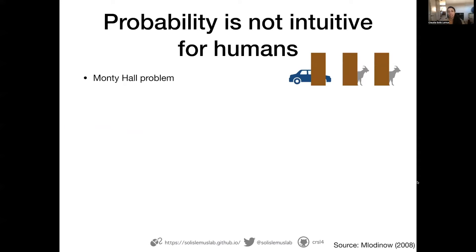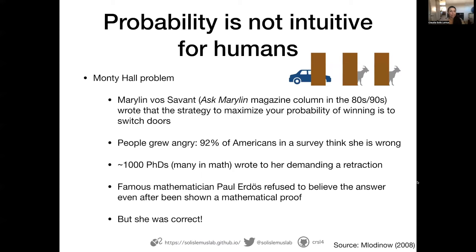There is one very famous example where this is very obvious, and that is the Monty Hall problem. We have three doors. Behind one door there is a car and behind the other two doors are goats. The participant selects one door randomly, then the host opens one of the doors that has a goat, and then you're given the opportunity to change doors or stay. The solution appeared in a column called 'Ask Marilyn,' written by Marilyn Vos Savant, and she wrote that the strategy to maximize your probability of winning is to switch doors.